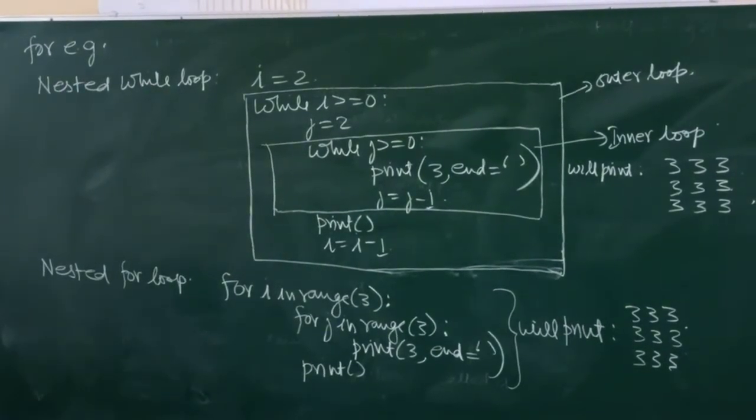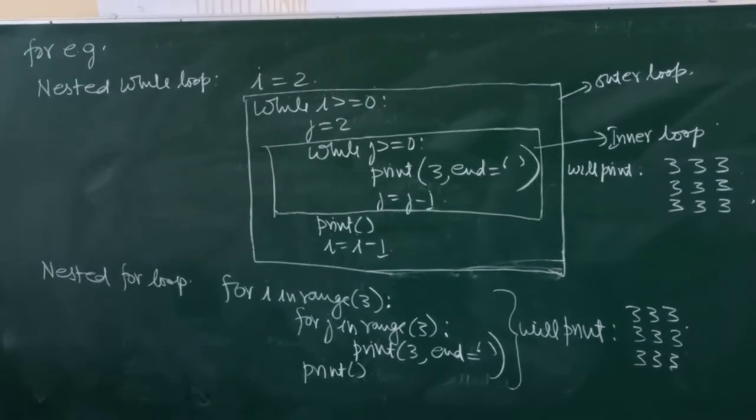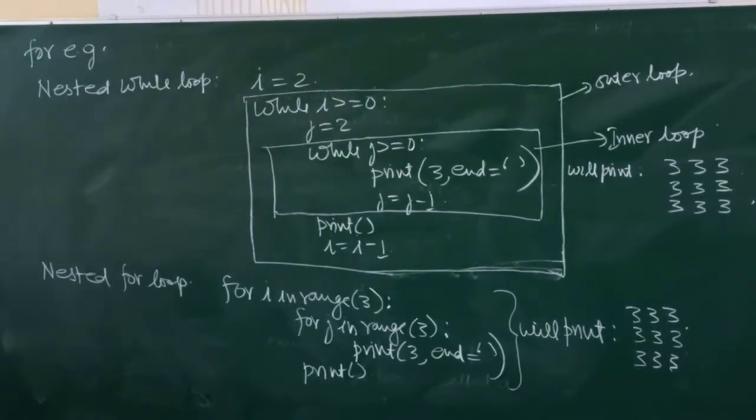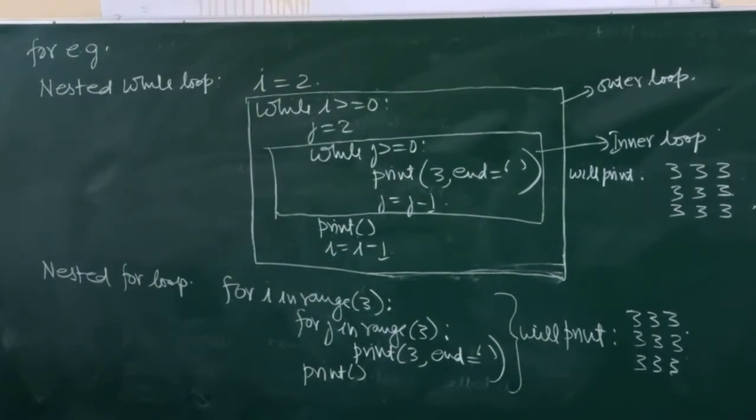Next example we will take the nested loop using for. In this, for i in range 3, for j in range 3, print 3, end equals to space, print.